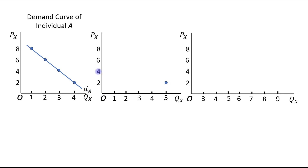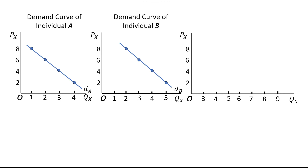At a price of 4 it is 4 kg, this point. At a price of 6 it is 3, and at a price of 8 it is 2 kg. We will join these combinations and we will get the demand curve of individual B.